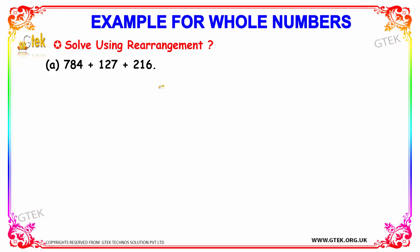Let's see the examples for whole numbers. The question we have here is to solve using the rearrangement concept. The question is: 784 plus 127 plus 216. Let's see the solution — how to rearrange this.